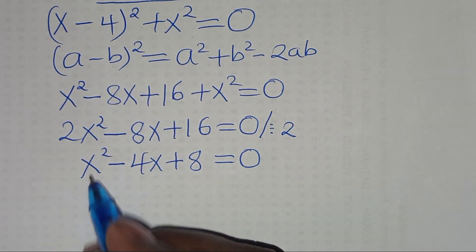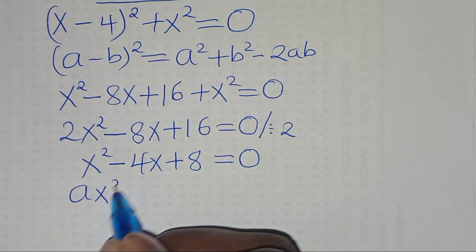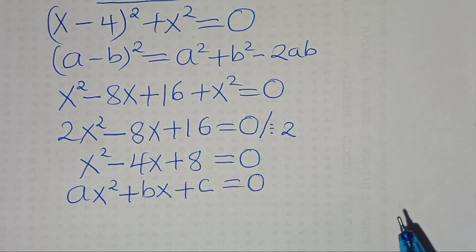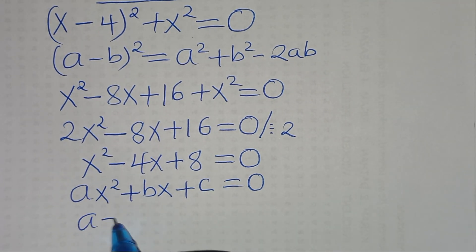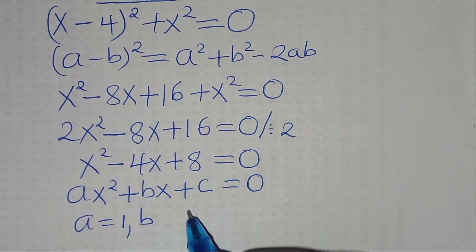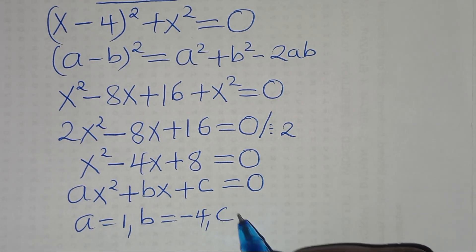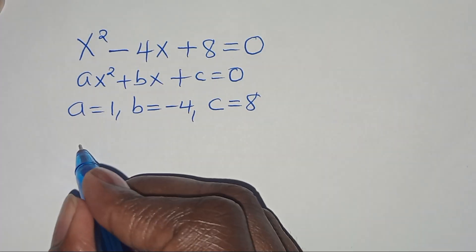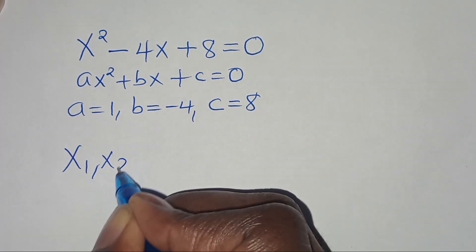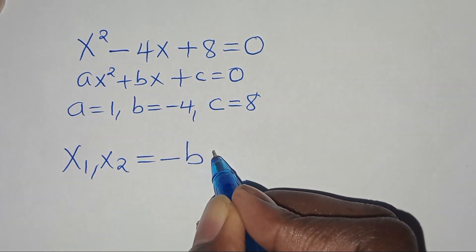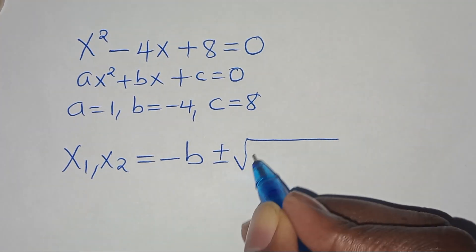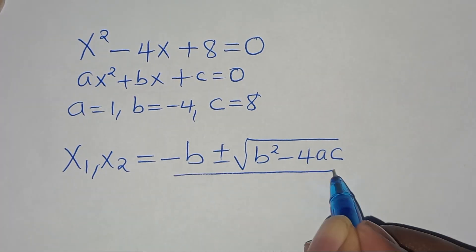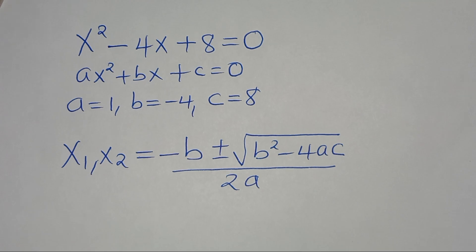This is a quadratic equation of the form ax² + bx + c = 0, where a equals 1, b equals negative 4, and c equals 8. To solve for x, we apply the quadratic formula: x equals negative b plus or minus the square root of (b² minus 4ac), all over 2a. Substituting the values of a, b, and c: